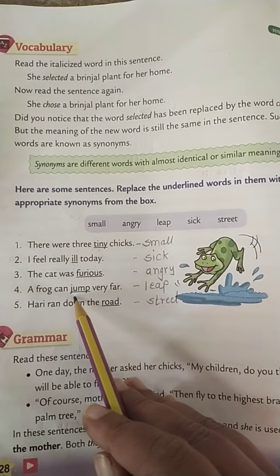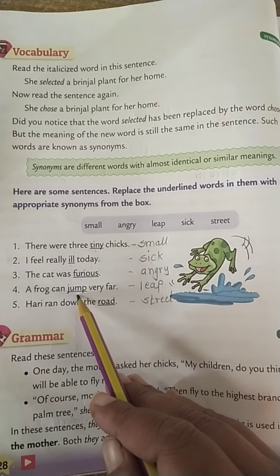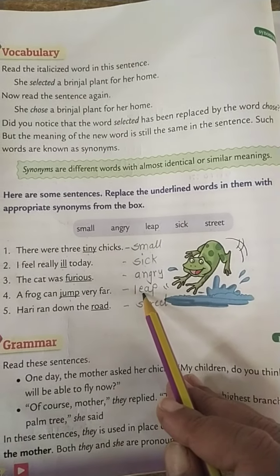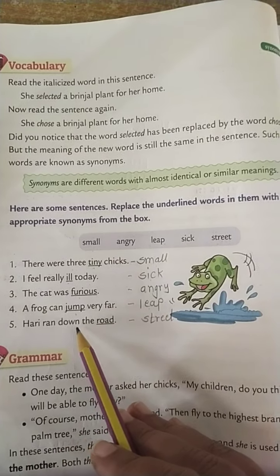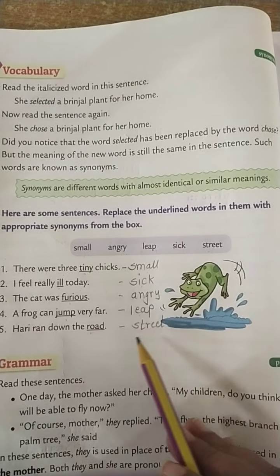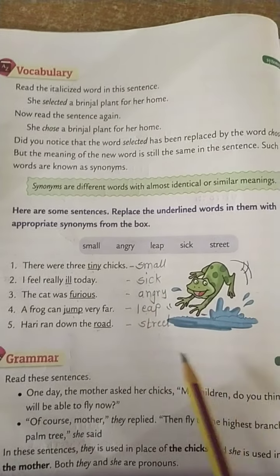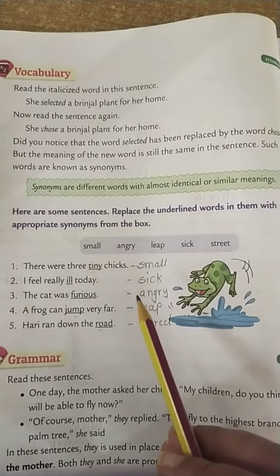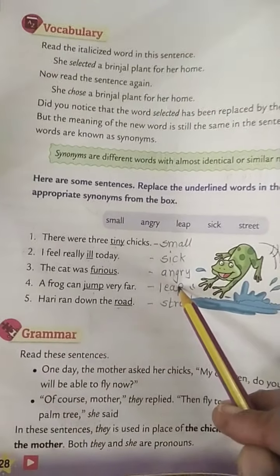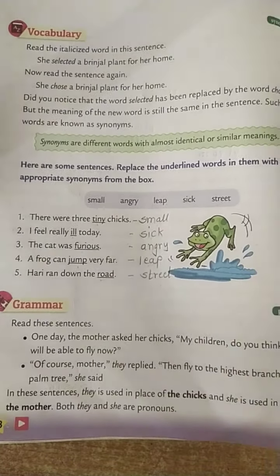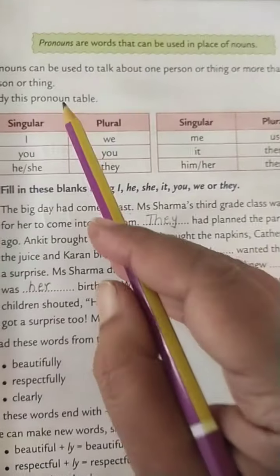Next: 'The cat was furious.' Furious means angry — furious ka synonym hai angry. 'A frog can jump very far' — a frog can jump a great distance; jump ka synonym hai leap. 'Hurry, run down the road' — road ka synonym hai street. Street means road. Write each sentence and replace the underlined word with its synonym on the side.